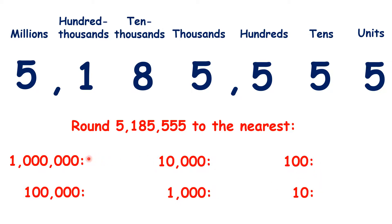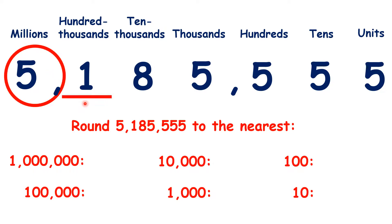Let's start by rounding to the nearest million. We find the place value — the millions place — and look to the right. Because we have a 1 in our 100,000s column, we know that we're rounding down, so we have 5,000,000.